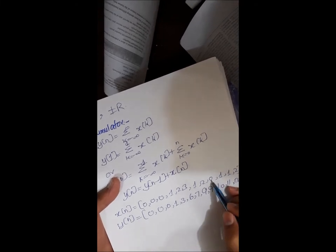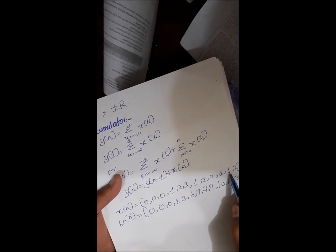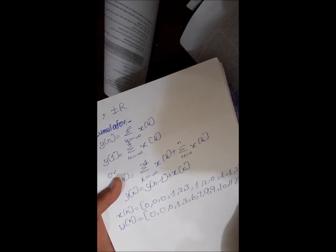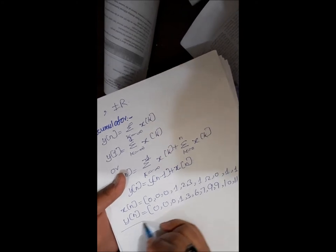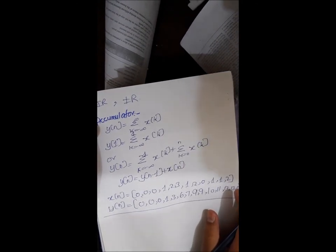This output is given in which it is equal to 3 plus 3 is 6, 6 plus 1 is 7, 7 plus 2 is 9, 9 plus 0 is 9, 9 plus 1 is 10, 10 plus 1 is 11, 11 plus 2 is 13, and 13 plus 0 is 13, 13 plus 0 is 13, similarly like this. And this was all for our today's lecture. Thanks for watching, Allah Hafiz.